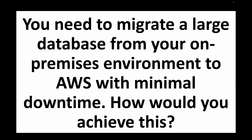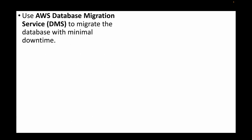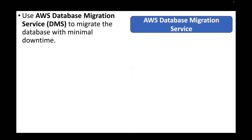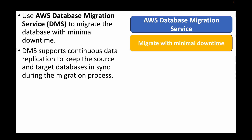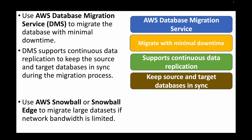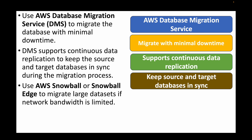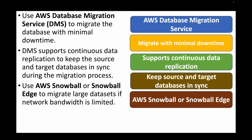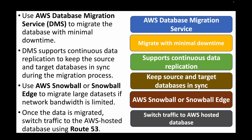The next question is: you need to migrate a large database from on-premises to AWS with minimal downtime — how would you achieve this? AWS Database Migration Service (DMS) can migrate any size of data with minimal downtime, supporting continuous replication to keep the source and target databases in sync during migration. If migrating very large datasets with limited network bandwidth, AWS Snowball or Snowball Edge can be used. Once migration is complete, traffic is switched to the AWS-hosted database using Route 53.